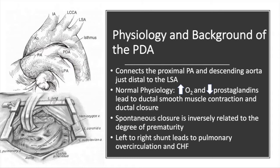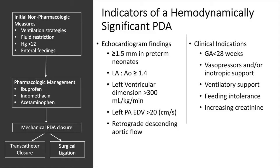This leads to a left-to-right shunt causing pulmonary overcirculation and left ventricular volume overload, and can lead to CHF. When assessing for hemodynamically significant PDAs, there are clinical and echocardiogram findings to guide decision making, such as a large diameter PDA, an enlarged left atrium, and retrograde descending aorta flow.